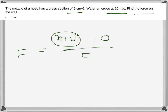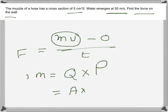Water emerges at 20 meters per second. To find the mass of the water, mass equals volume times density. The volume Q equals cross-sectional area times 20 meters per second — this gives the volume of water hitting the wall per second, which lets us find the change of momentum per second.